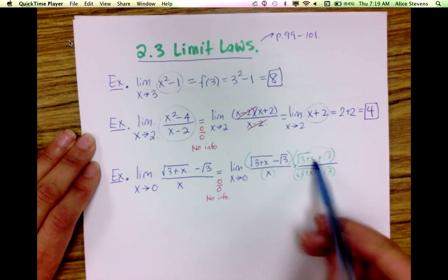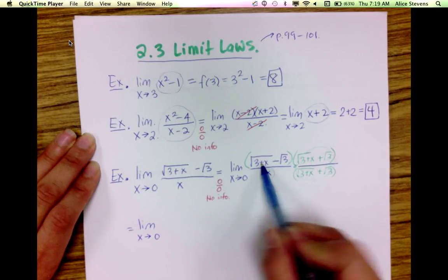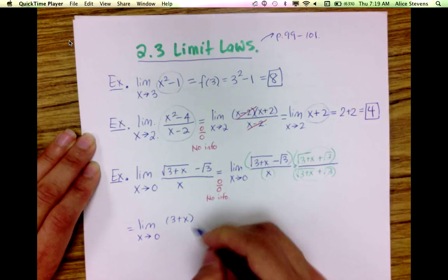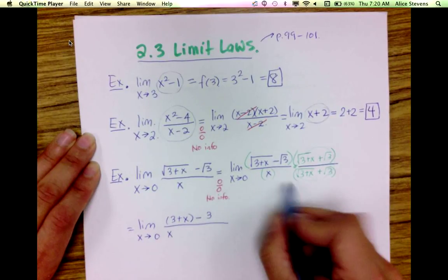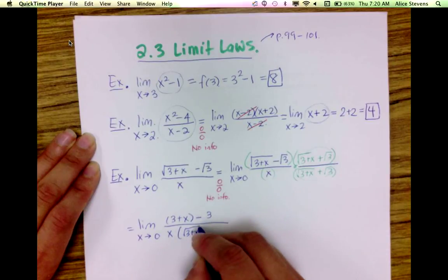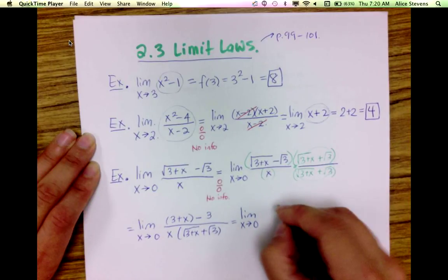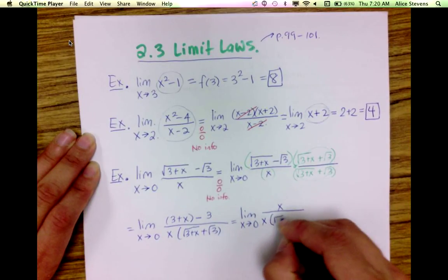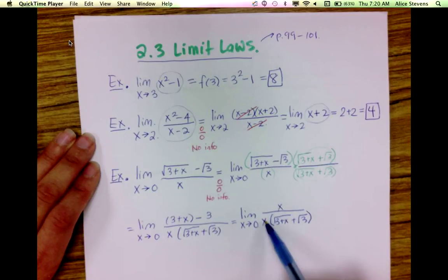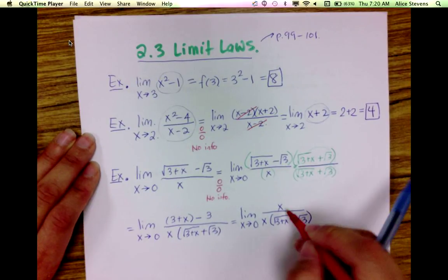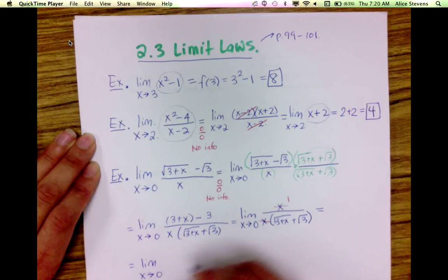Instead of foiling the whole thing out, this term times this term gives me 3 plus x, minus root 3 times root 3 which gives me 3. The denominator I have is x times (√(3+x) + √3). Simplifying gives me x over x times (√(3+x) + √3). I can see I'm still going to get 0 over 0 with direct substitution, but I can cancel the x factors.